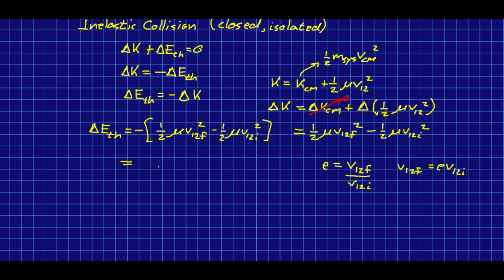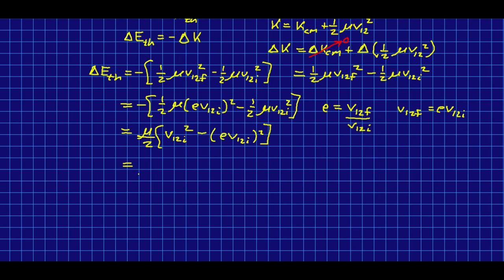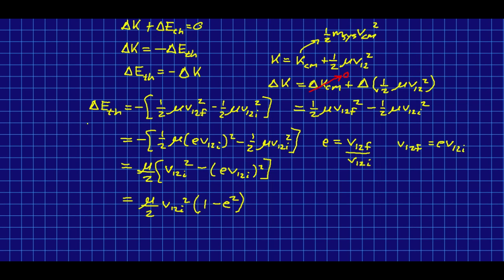I'm going to factor out the half mu and carry the negative through, which is just going to reverse the order here. And I have a common factor of v12i squared, so I can write this this way. And so if I know the coefficient of restitution and the initial relative speed of the objects in the collision, I can very quickly get the production of thermal energy in my system.